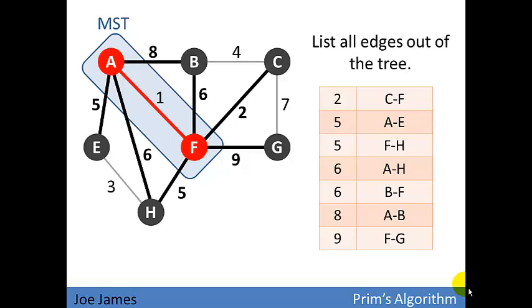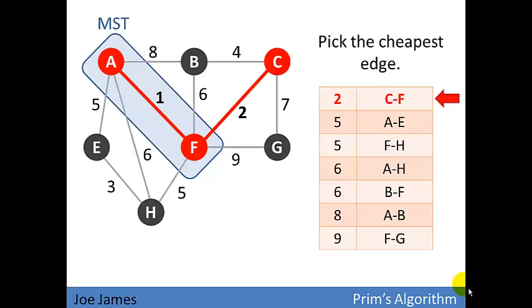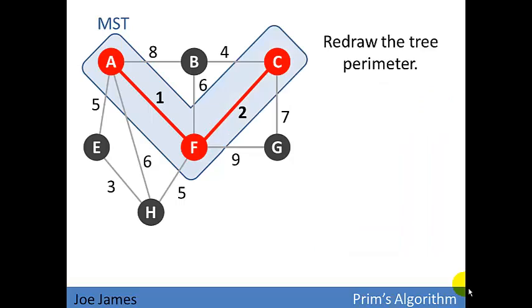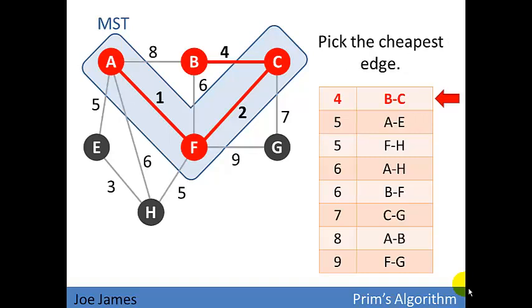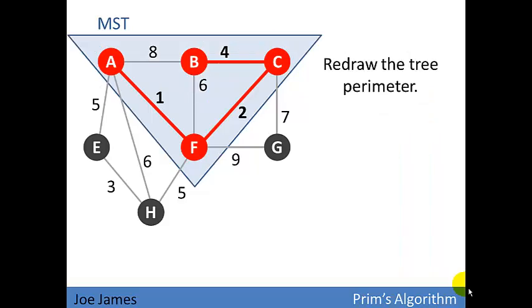We're going to redraw our tree perimeter. Now we're going to list out all the edges of the tree that go out of our tree AF. The cheapest edge is CF with a cost of two. So we're going to pick that edge. We map that into our tree, redraw the perimeter line. And then we look at all edges out of the tree AFC. That's our tree now. So the cheapest edge now is BC with a weight of four.